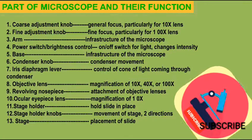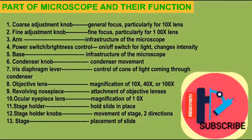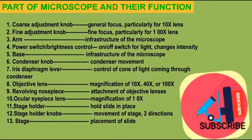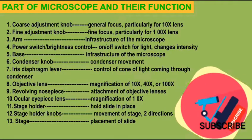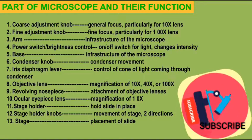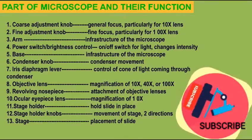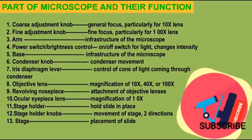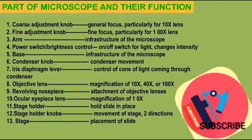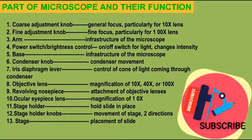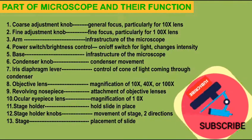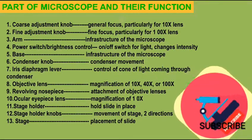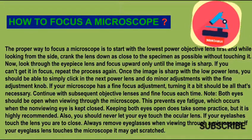Various parts and their functions: the coarse adjustment knob is used for general focusing, particularly for the 10x lens. The fine adjustment knob is for fine focusing, particularly for the 100x lens. The arm is the infrastructure of the microscope. The power switch or brightness control is the on/off switch for light and changes intensity. The base is the infrastructure. The condenser knob controls condenser movement. The iris diaphragm lever controls the cone of light coming through the condenser. Objective lenses provide magnification of 10x, 40x, 100x, etc. The revolving nosepiece is for attachment of objective lenses. The ocular eyepiece lens provides magnification of 10x. The stage holder holds slides in place. Stage holder knobs move the stage in two directions. The stage is the placement area for slides.